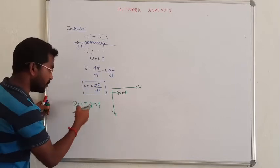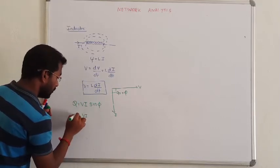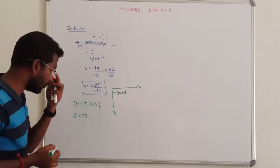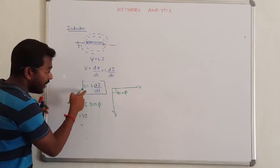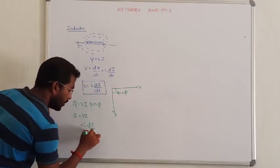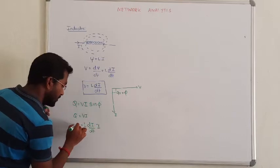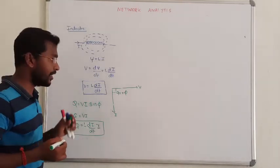That is going to be v into i, that is the formula to obtain reactive power. Substitute the value, you will get L into di by dt into i. So that is the formula to obtain the power of the inductor.